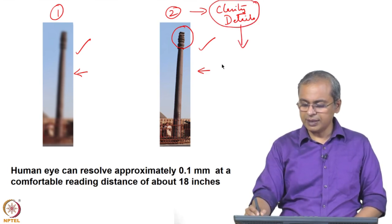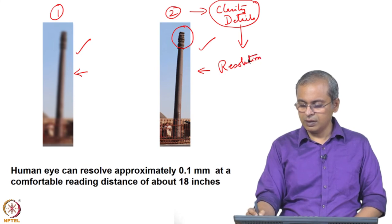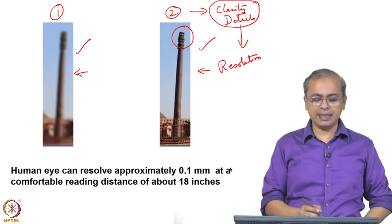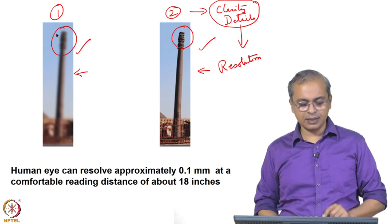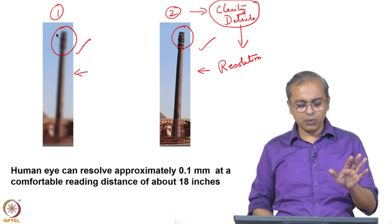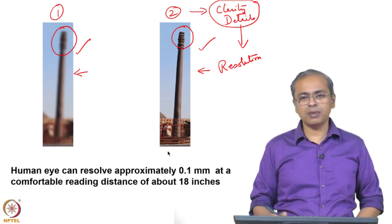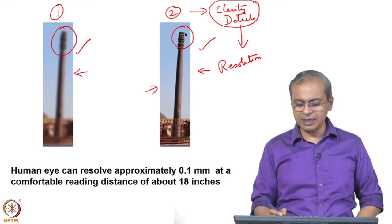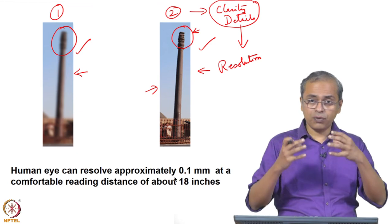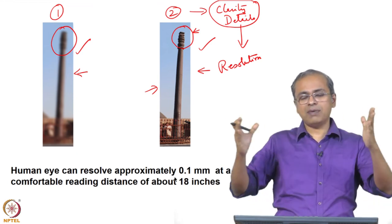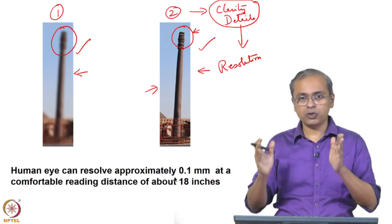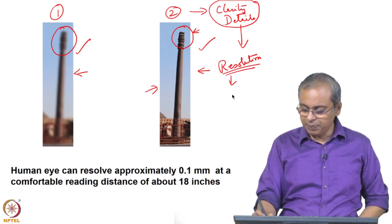Resolution is the ability to show two adjacent points as two separate points. If the microscope helps you see a dark spot and a gray spot separately, you can identify two distinct features. But if the microscope gives you only an averaged dull gray across both, you cannot distinguish the two details. Lower-resolution instruments take multiple points and average them, while higher-resolution instruments give you much finer detail.